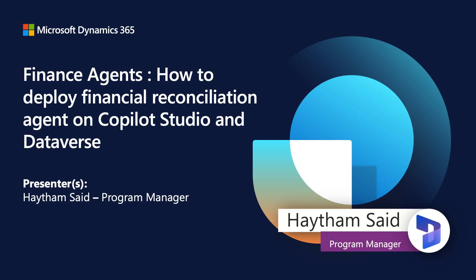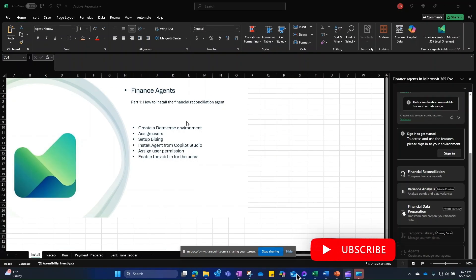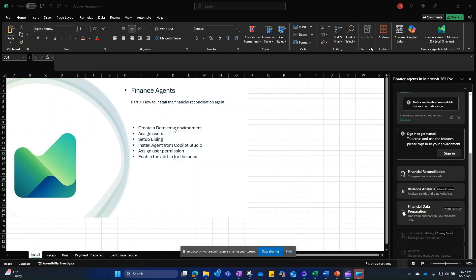Welcome to the Finance Agents video series. In part one, we will see how to install the financial reconciliation agents. We will be following the deployment guide, covering how to create a Dataverse environment or use an existing one, how to assign users, set up billing, and install the agents from Copilot Studio, as well as assign user permissions.